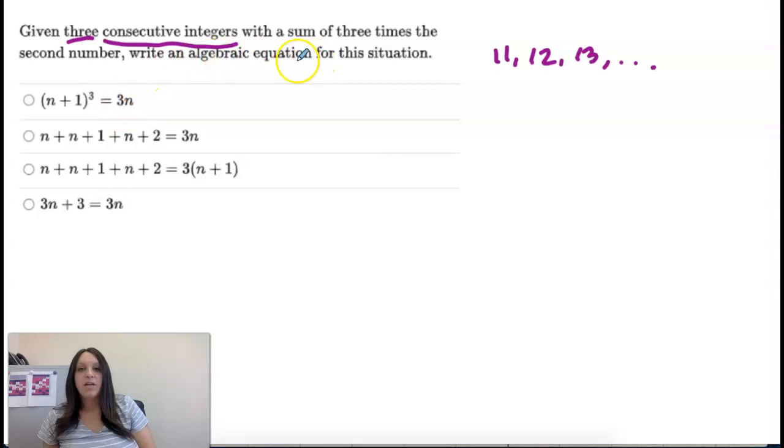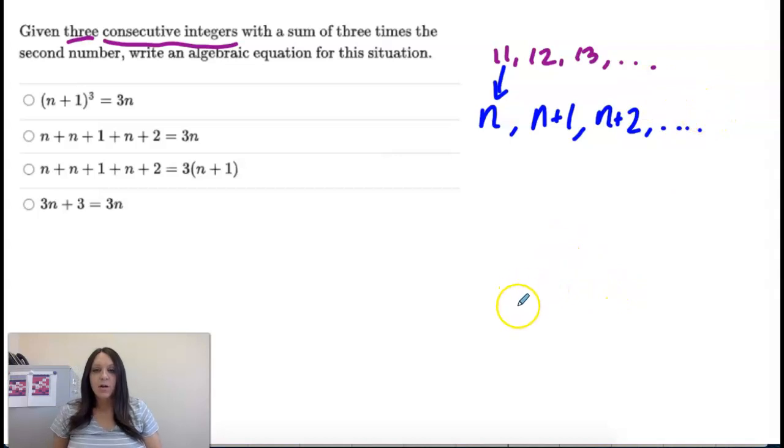So if I want to write an equation for this, I would make my first number n and then to get to the next number, I would take n plus 1 and then to get to the next number, like from 11 to 13, it would be n plus 2. And that would just keep going where n is your starting number and you just continue to add as you go along.